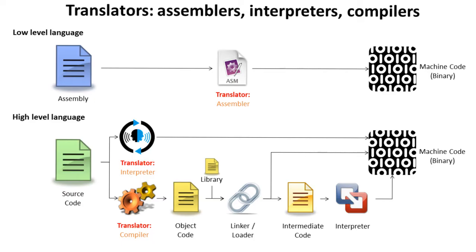Next we have compilers. Compilers are subtly different. The big difference to note for your exam is: whereas the interpreter was taking one line of source code, translating it and running it, then another line, translating it and running it — a compiler first of all takes the entire source code, translates it completely, and then by the end of the process produces the machine code which is run. So the interpreter is going line by line, whereas the compiler is translating the entire source code.